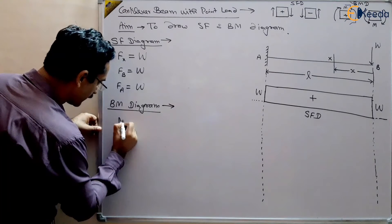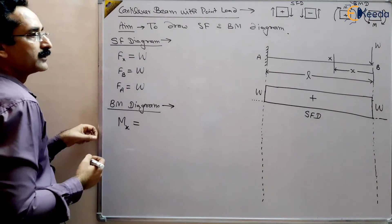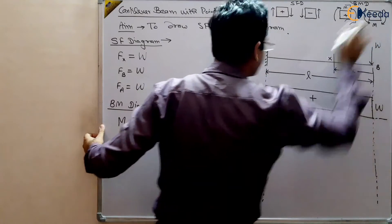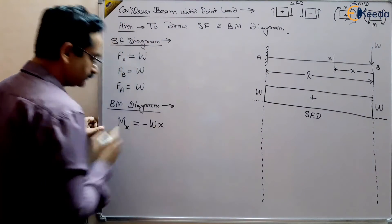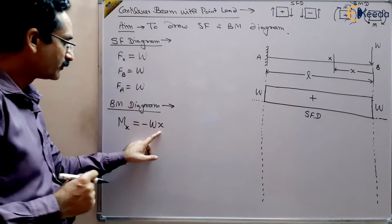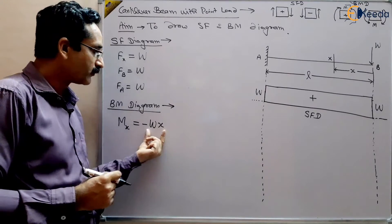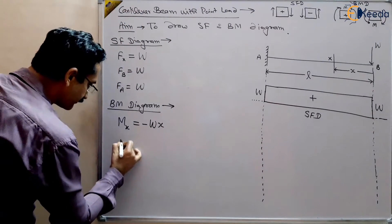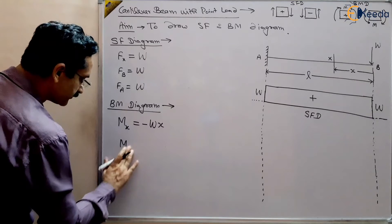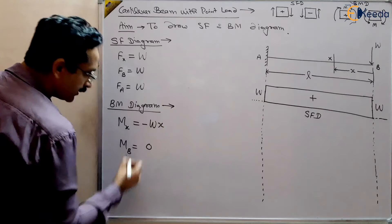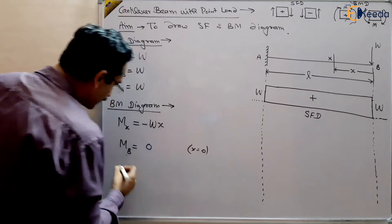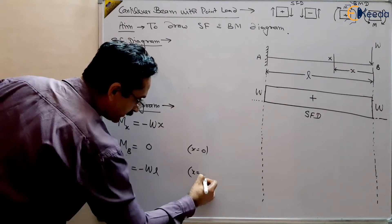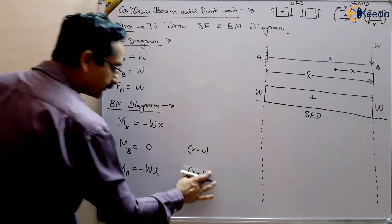The bending moment at point X equals force multiplied by distance: W multiplied by X. It is negative according to the sign convention, so MX = −WX. It is linearly varying — there is a term X. When X is 0 (at point B), the bending moment is 0. When X equals L (at point A), the bending moment is −WL.